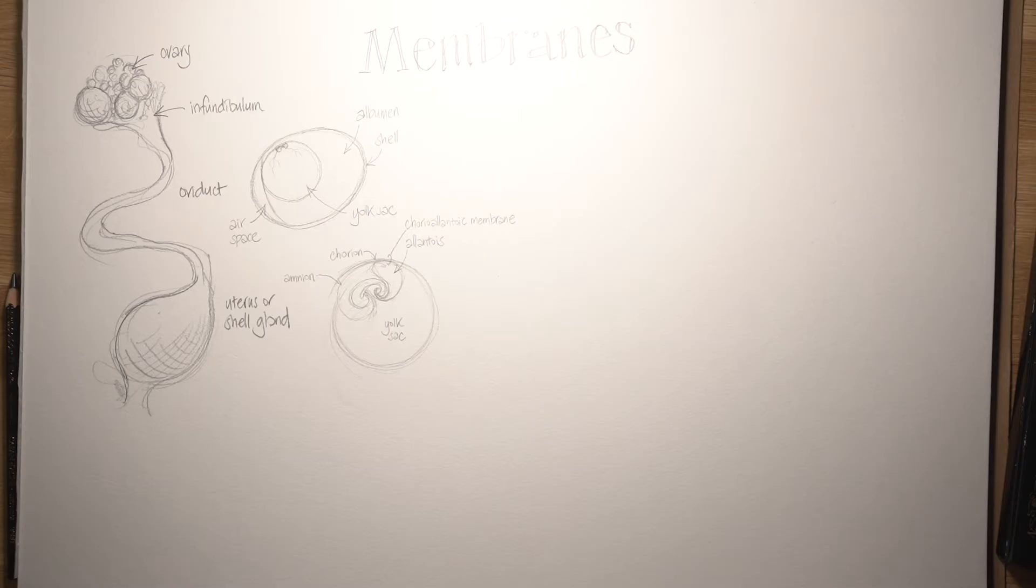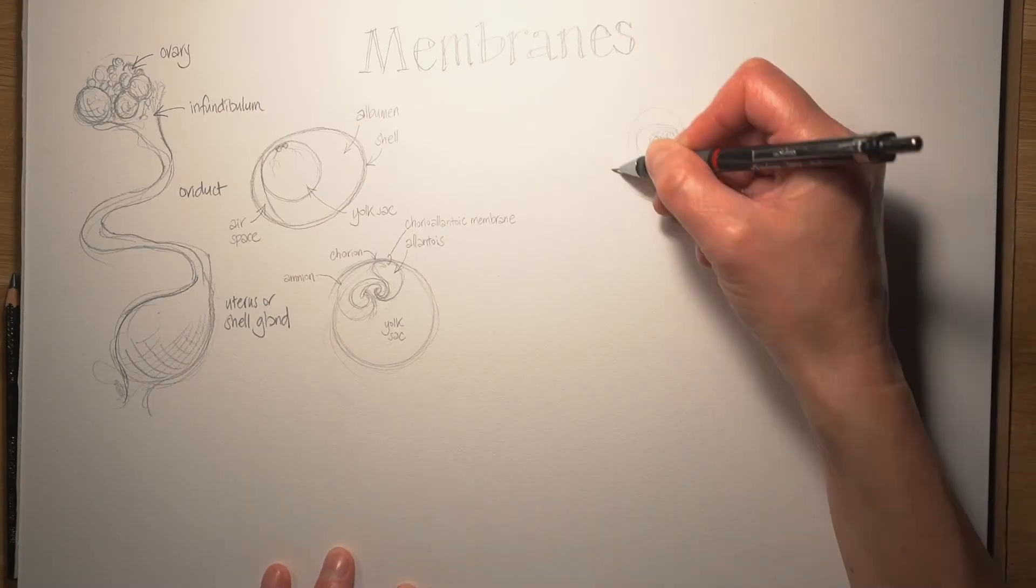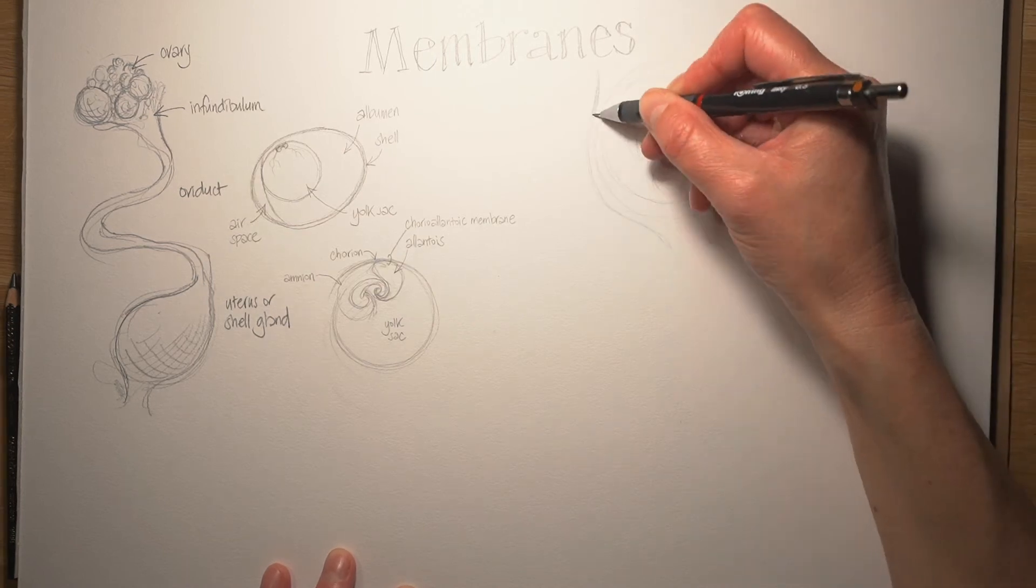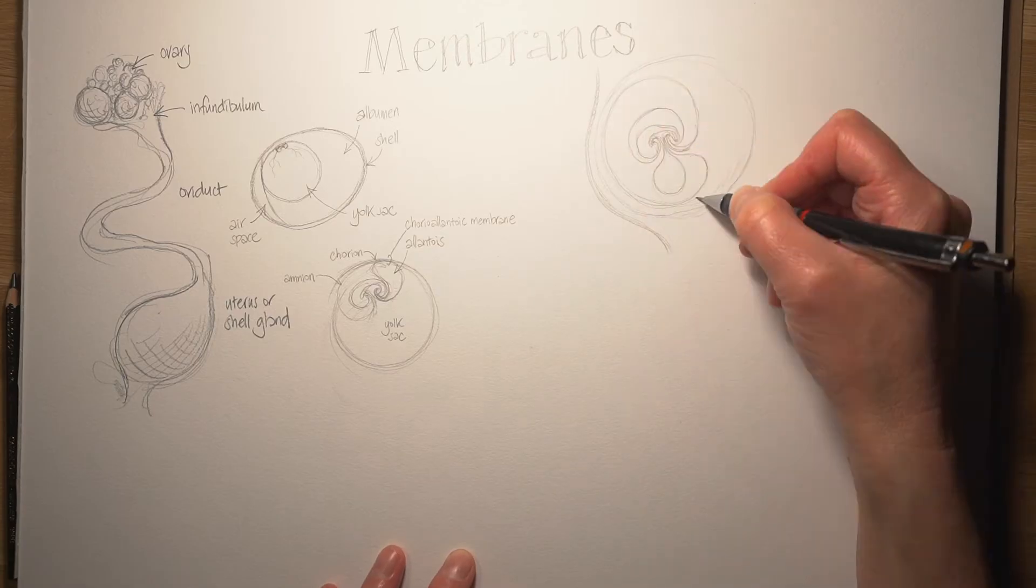So there we have it then, the developing chick embryo. Now we're going to switch and look at the developing human embryo and find lots of analogies with that developing chick and the membranes around it.